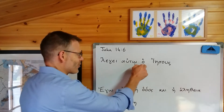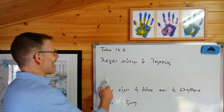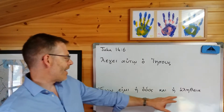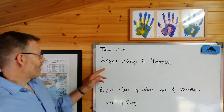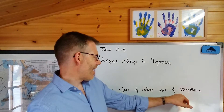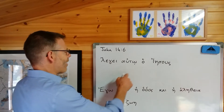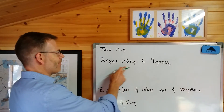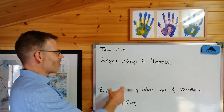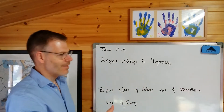There's a textual variant here — the hoti might not be there. In some manuscripts it's not there, but let's assume it's there because it makes things nice and easy. Let's translate this first and see what's going on. So, legei autō hoti Iēsous — that's 'he said to him,' and then hoti Iēsous is the subject of the verb legei. So this means: Jesus — legei — says to him.